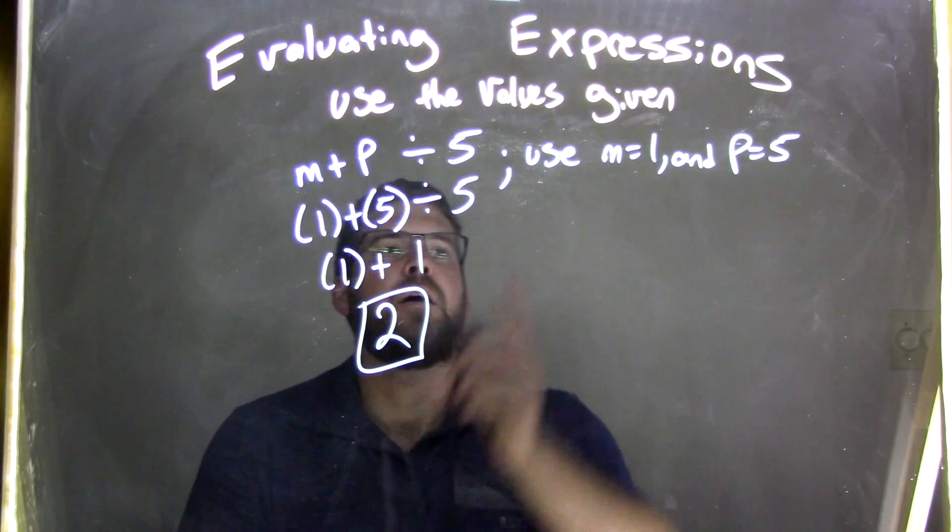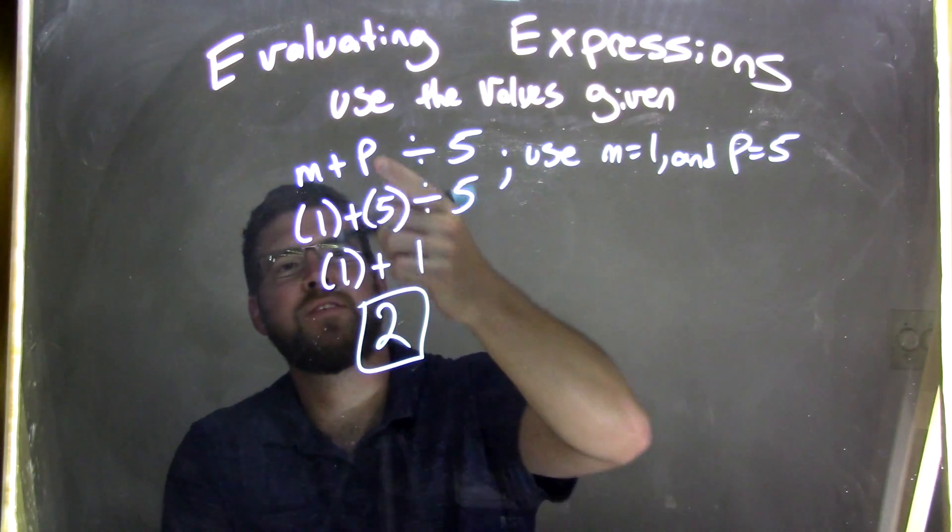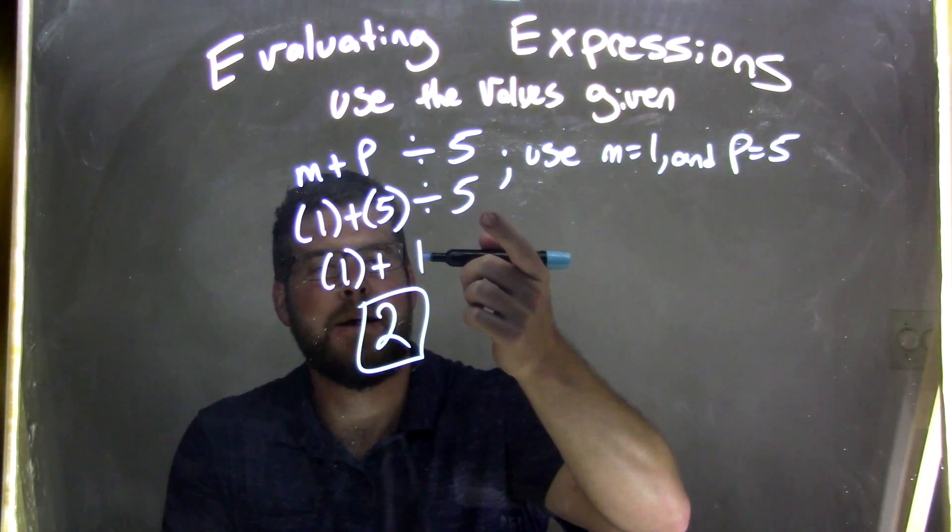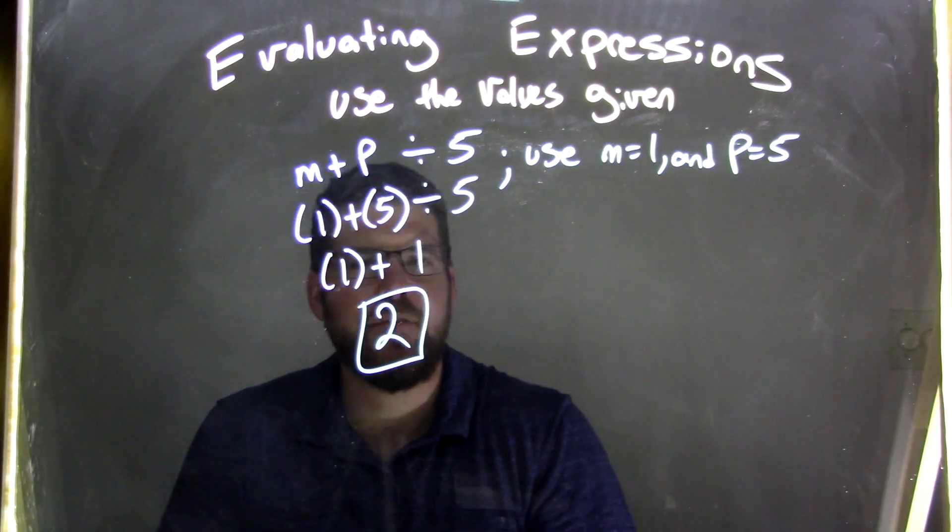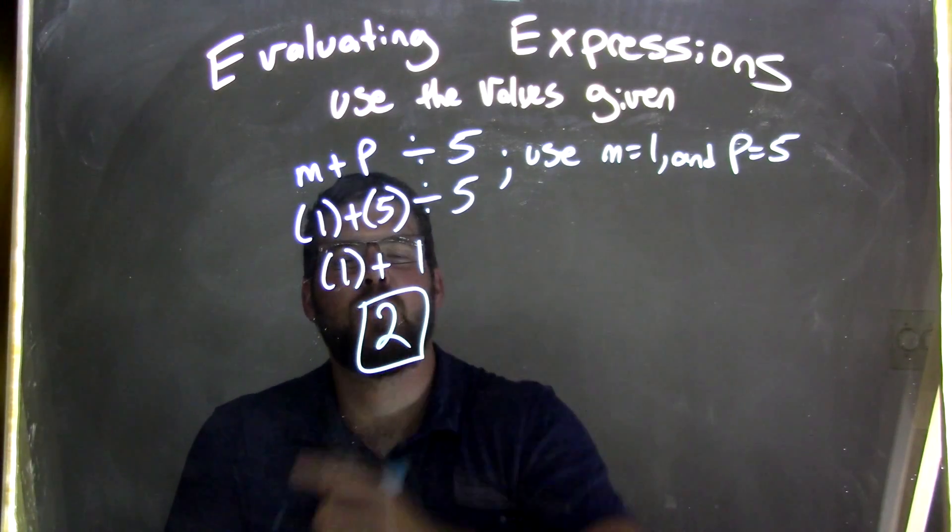Let's recap. We took m equals 1 and substituted that in with parentheses. P is 5, substituted that in for p, and we divided by 5. Then 5 divided by 5 came first because division comes before addition. So 5 divided by 5 is 1, and 1 plus 1 is 2.